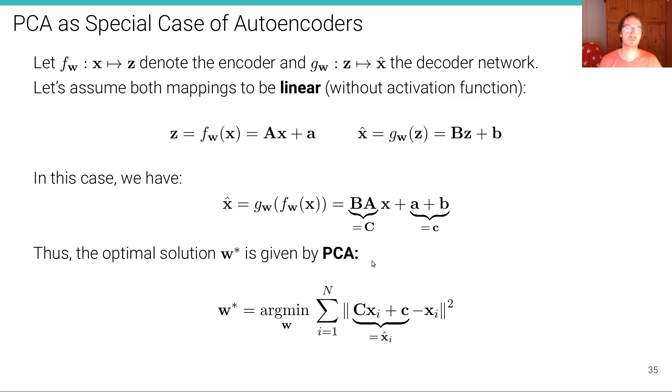And we know already that for this mapping, the optimal solution w star is given by PCA if we minimize the L2 reconstruction error. So both are equivalent if we assume the encoder and the decoder to be linear layers without activation functions.